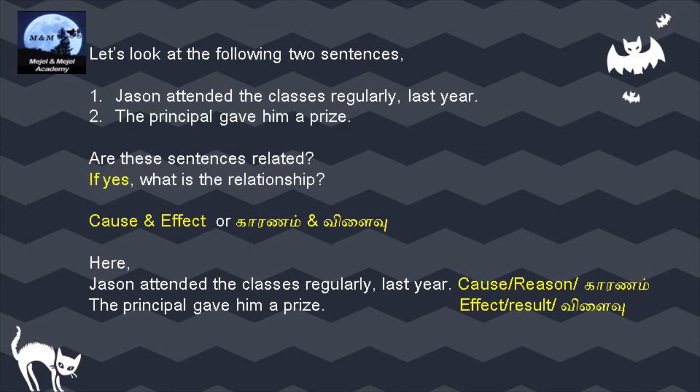This relationship is called cause and effect relationship — in Tamil, 'karanamum vilaivu.' For example: if you study well, you pass — that's cause and effect. If you eat well, you are healthy — cause and effect. Here, 'Jason attended the classes regularly last year' is the cause or reason (karanam), and 'The principal gave him a prize' is the effect or result (vilaivu).